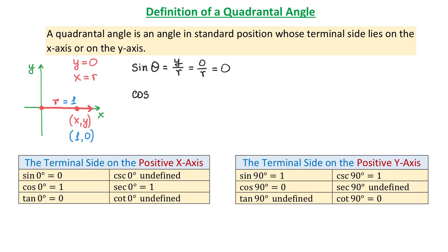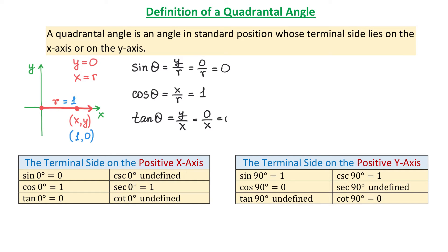Cosine(θ) by definition is x/r. Because x is the same as r, when we divide them we get 1. So cosine of 0° equals 1. Tangent(θ) by definition is y/x, and because y is 0, 0 divided by x is 0. So tangent of 0° is 0.